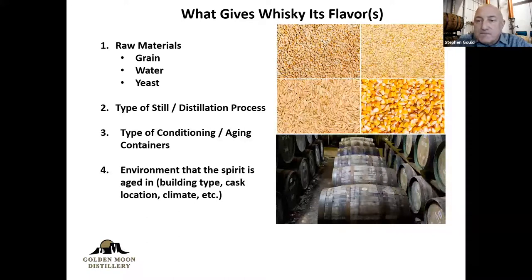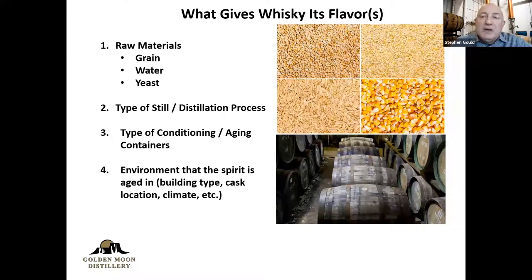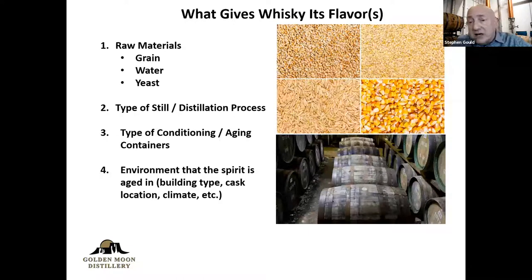Let's talk about containers for a moment. Whiskeys in Europe must be aged in wood for a minimum of three years. Japan and Australia and other countries, it's 24 months. In the United States, there's absolutely no aging requirement to be a whiskey. However, to be a straight whiskey it's got to be two years, and to be bottled in bond it must be four years and all done in the same bonded facility — hence the name bottled in bond. The wood is historically oak, though other woods can and are used around the world. In the U.S. by law, the container must be oak, but it doesn't need to be solely made of oak. So for example, you can have a barrel with oak staves and acacia wood heads.